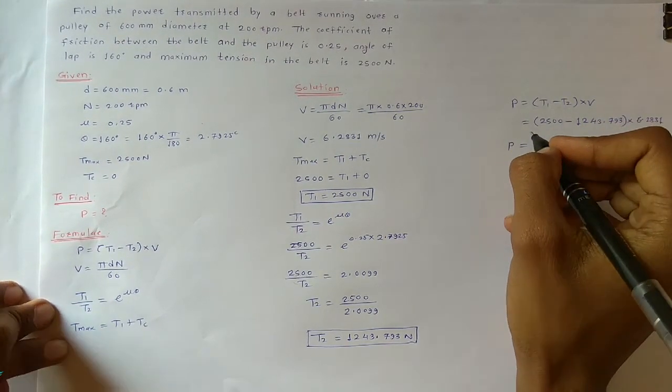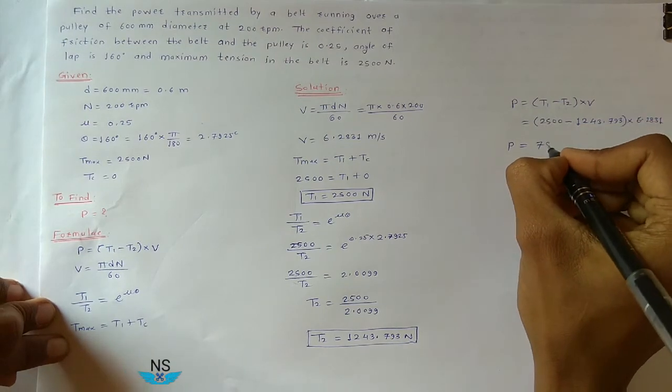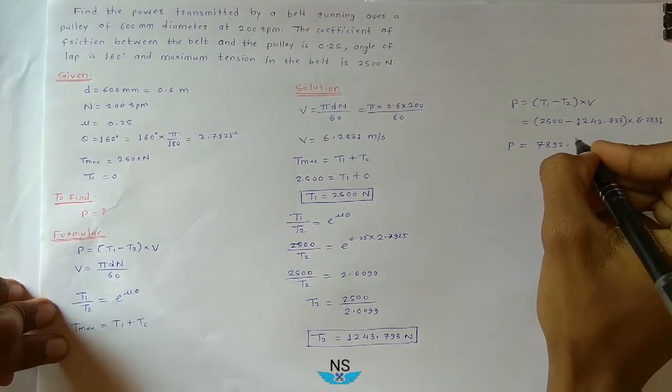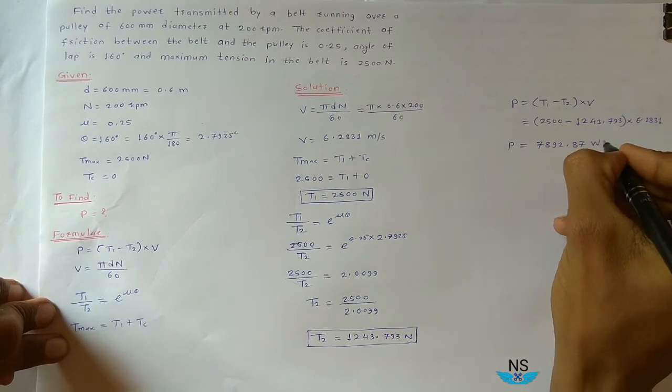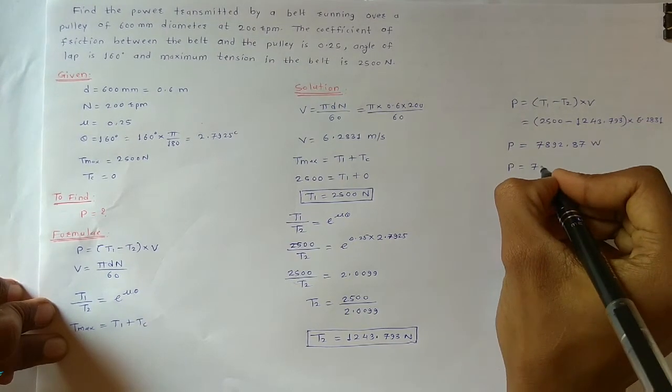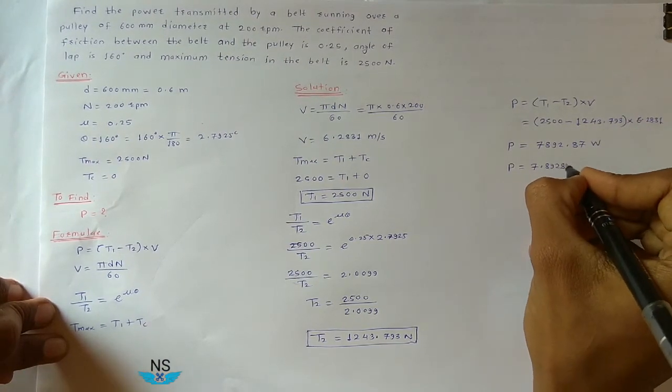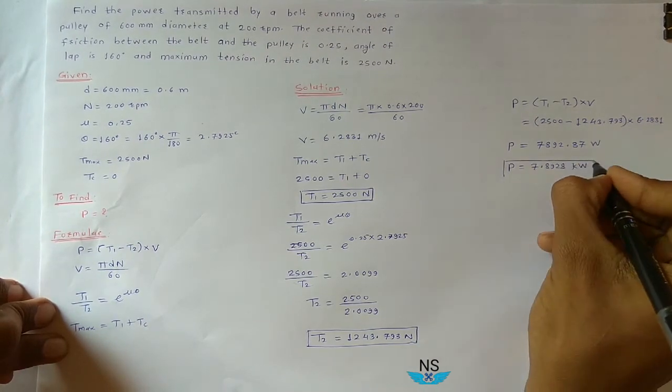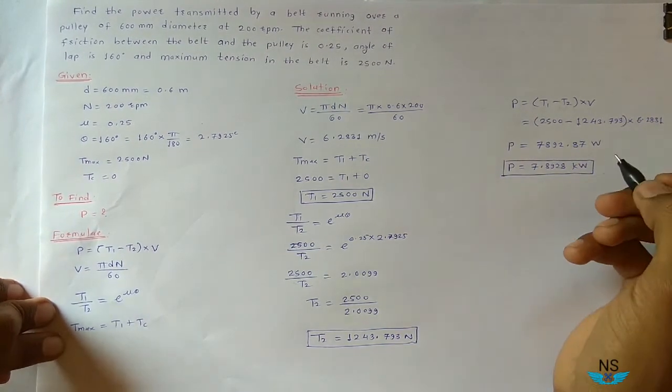Power P is equal to... power P becomes 7892.87 Watt. So P is equal to 7.89287 kilowatts. This is our required answer.